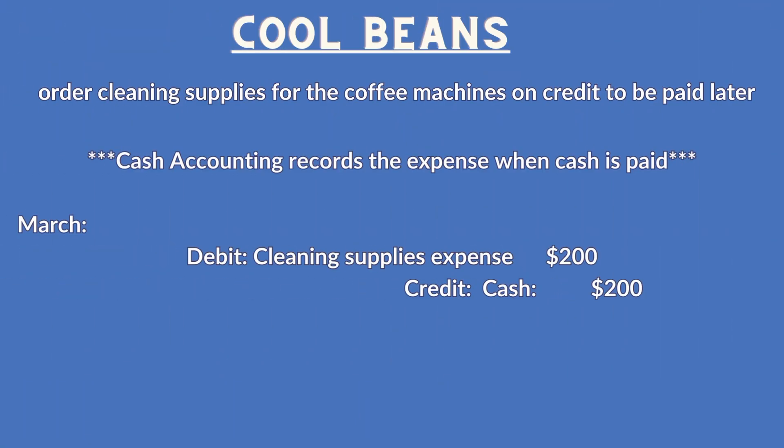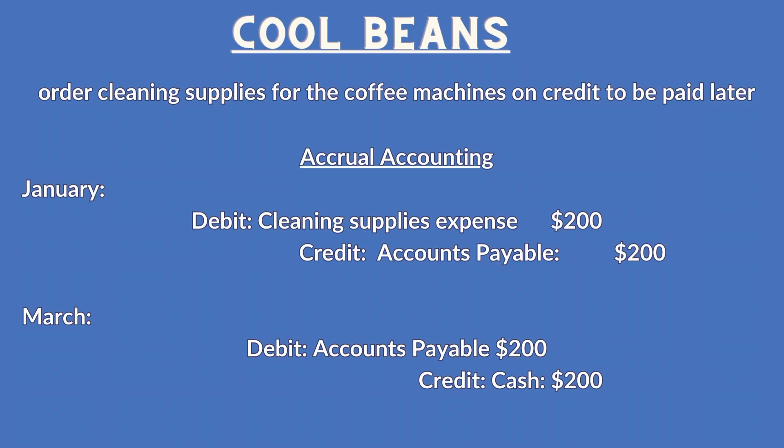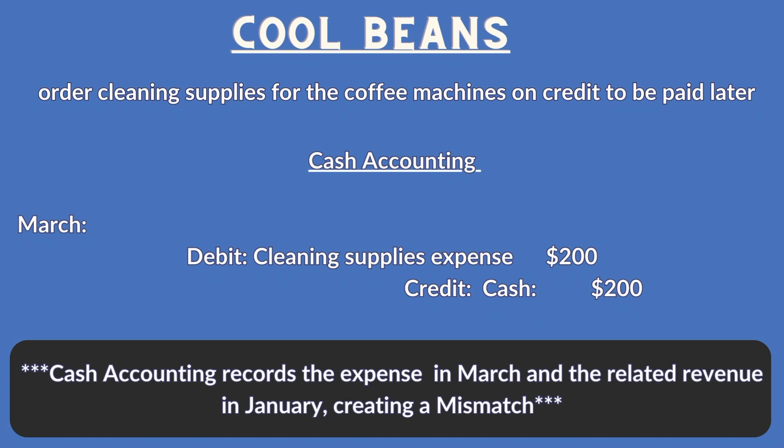Imagine you buy and use the supplies in January and pay for them in March. Under the cash accounting method, your journal entry is recorded in March when the cash is paid: debit cleaning supplies for $200 and credit cash for $200. Under the accrual accounting method, you recorded the expense and liability in January: debit cleaning supplies expense for $200, credit accounts payable for $200. Then in March, when you pay for the supplies, the journal entry only affects the balance sheet — you debit accounts payable and credit cash for $200.